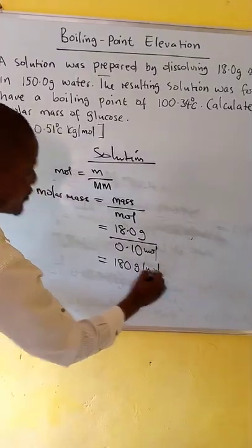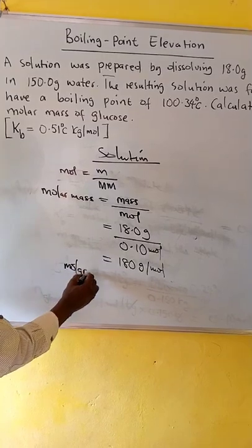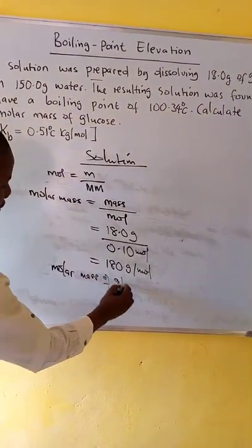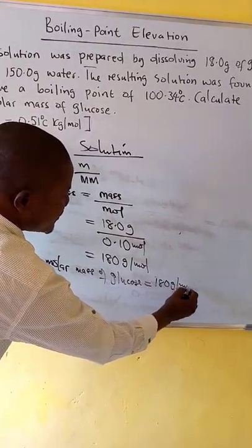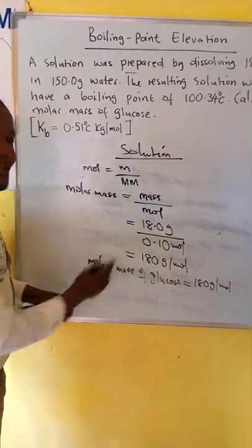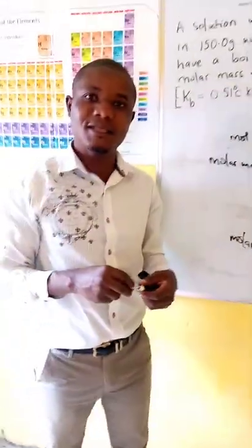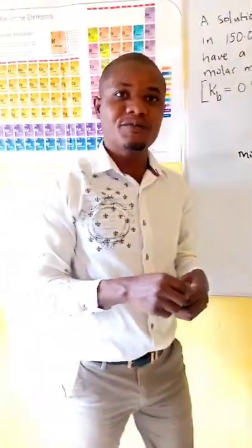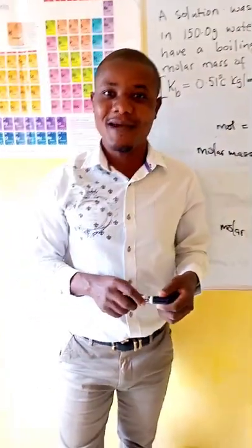So this is the molar mass of glucose: 180 grams per mol. This is how we can calculate the molar mass from boiling point elevation. In the next tutorial we will look at freezing point depression. Don't forget to subscribe to my channel. Thanks for watching, bye.